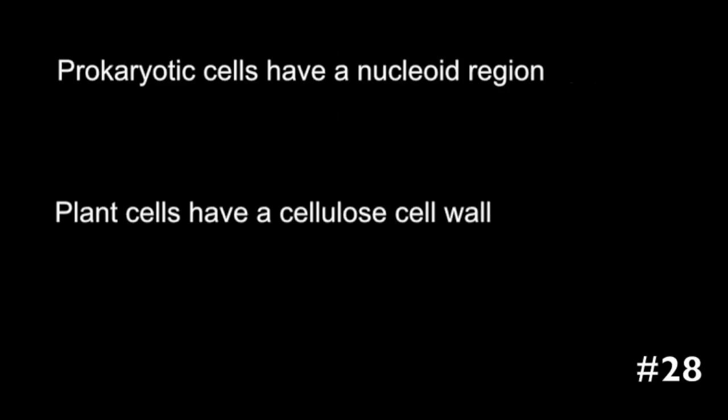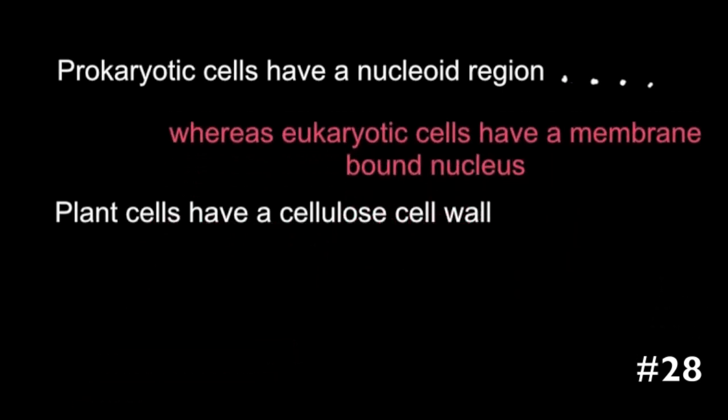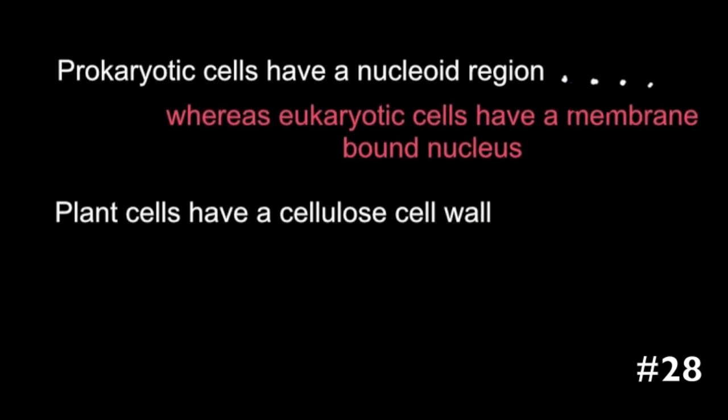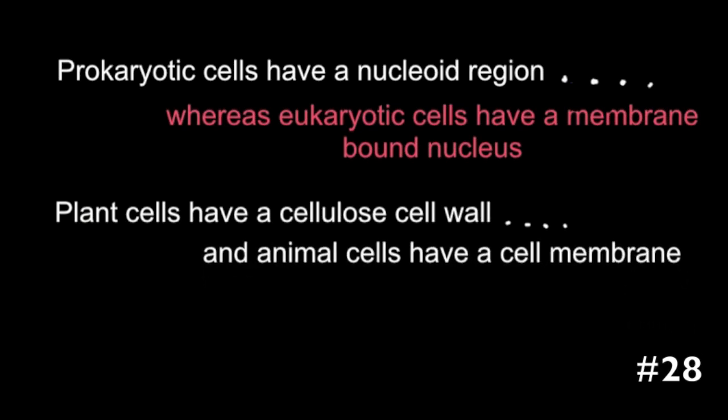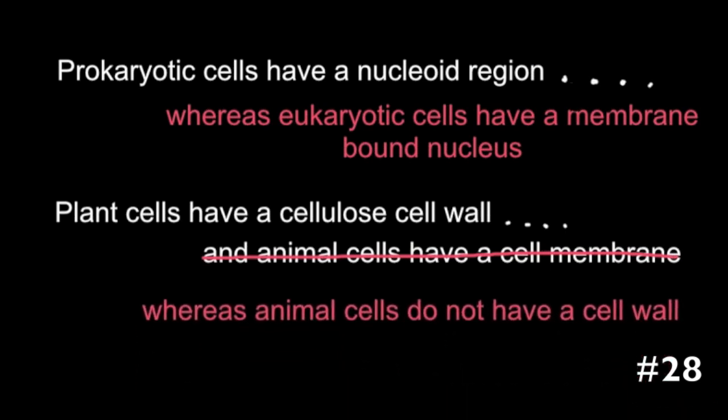When comparing different cell types, for example prokaryote, eukaryote, plant and animal, students are only giving half of the sentence. This is a mistake. You can't leave it to the examiner to complete the sentence. If you're going to say prokaryotic cells have a nucleoid region, finish the sentence by saying whereas eukaryotic cells have a membrane bound nucleus. With plant and animal cells, typically some people have said plant cells have a cellulose cell wall and animal cells have a cell membrane. Well, plant cells have a cell membrane too, so that's not a good comparison. You should say that animal cells do not have a cell wall, and that would complete the comparison.